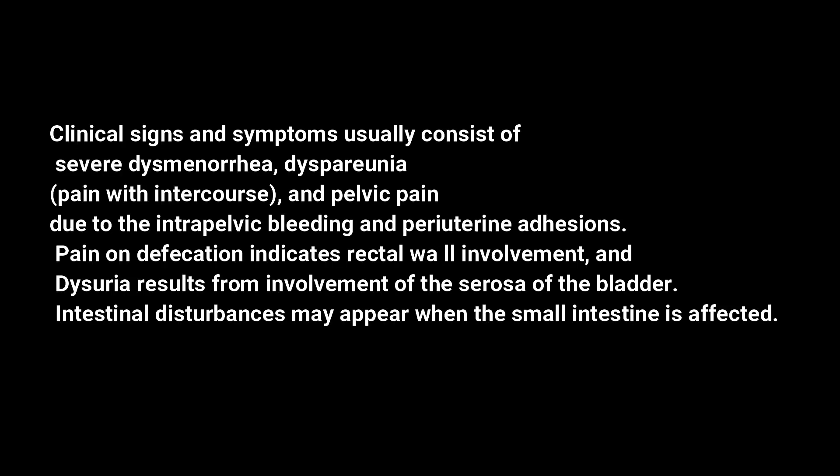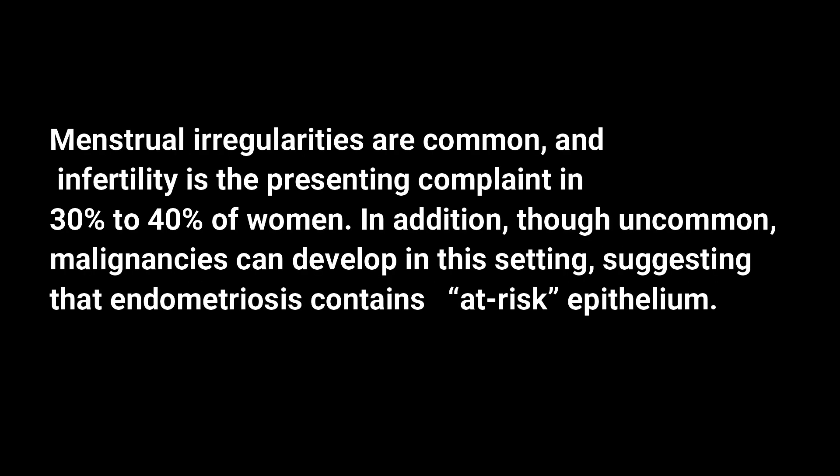Clinical features depend on the site involved. They include dysmenorrhea, pain during intercourse, and pelvic pain due to intra-pelvic bleeding and periuterine adhesions. If the rectum is involved, pain occurs during defecation; dysuria occurs with urinary bladder involvement; intestinal disturbances appear when the small intestine is affected. Menstrual irregularities are common and infertility is seen in 30 to 40 percent of females. Malignancies can develop in this setting, suggesting that endometriosis contains at-risk epithelium.